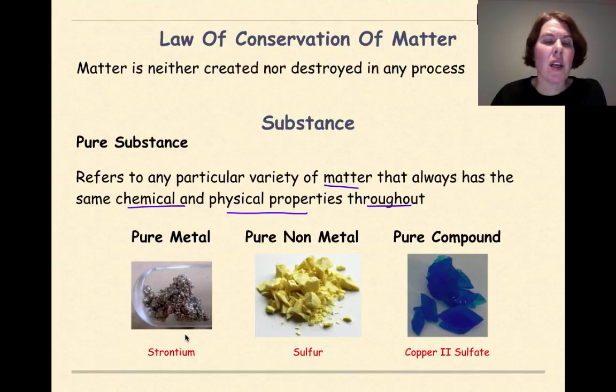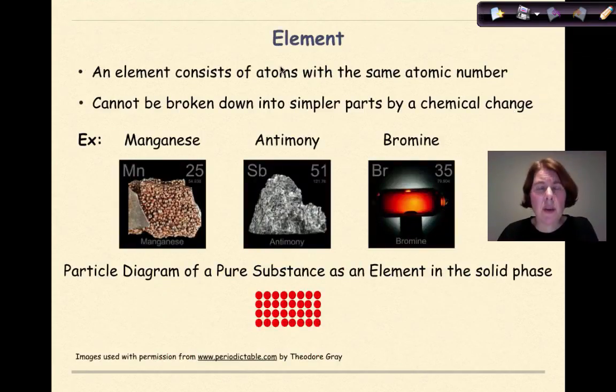So something like pure metal, like this image of strontium metal that we have here, a pure non-metal like sulfur, or a pure compound like this sample of copper sulfate. All of these would be considered pure substances. The category of pure substances can be broken down into two components, elements and compounds.